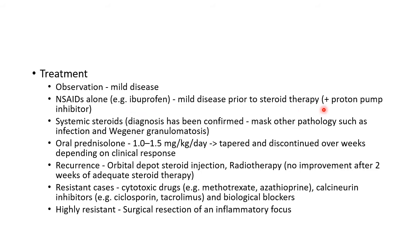NSAIDs should always be combined with a proton pump inhibitor. Systemic steroids can be started for moderate disease, but only after the diagnosis has been confirmed, because systemic steroids can mask other pathologies such as infection and Wegener's granulomatosis. The dose is oral prednisolone 1 to 1.5 mg per kilogram per day, tapered and discontinued over weeks depending on clinical response.